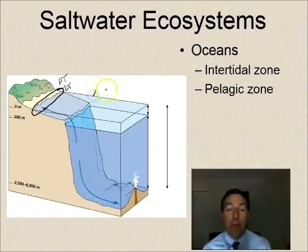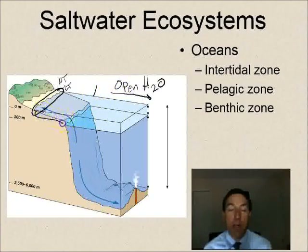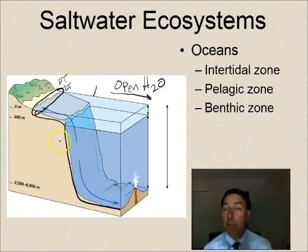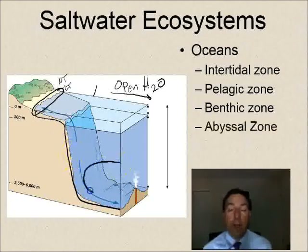The pelagic zone is the open ocean past the continental shelf — all the open water is pelagic. The benthic zone in the ocean, just like in freshwater, is the entire bottom regardless of depth. Animals in the ocean's benthic zone — called benthos — include crabs, lobsters, shrimp, snails, worms, and stingrays.